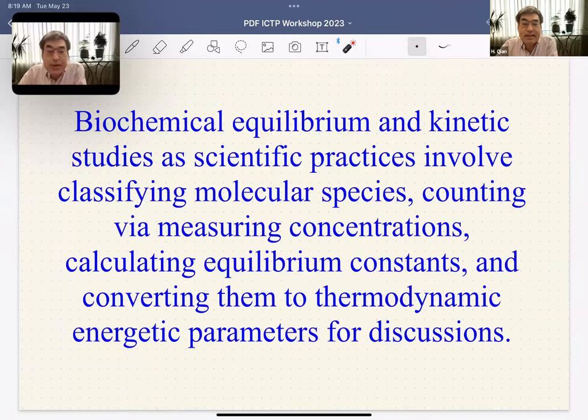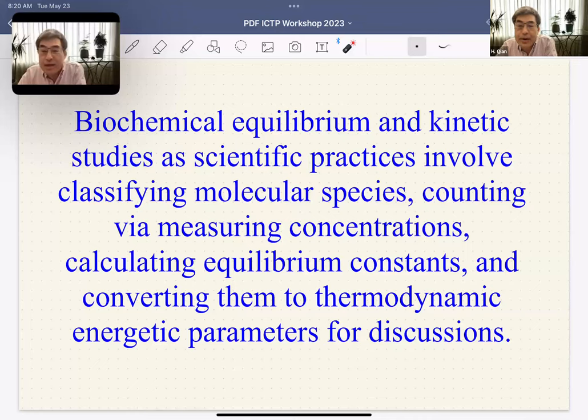If you immerse yourself in biochemical studies of equilibrium and kinetics, the whole scientific practice goes like this: classify molecules into species, do counting, measure concentrations, calculate equilibrium constants, convert them into thermodynamic energetics, and the whole physical chemical discussion starts from there. I want to argue this practice can be lifted as a paradigm for studying any kind of data.